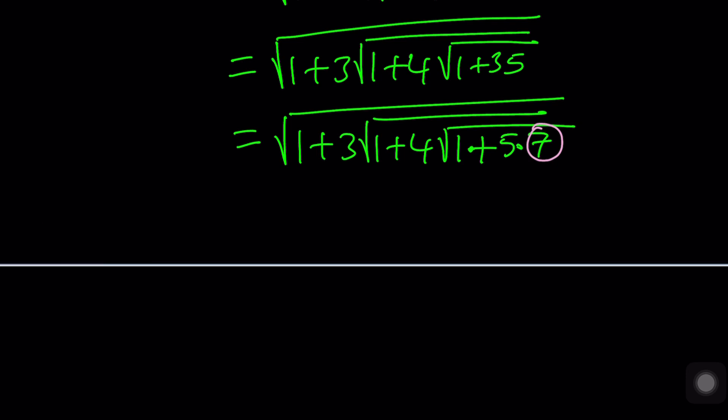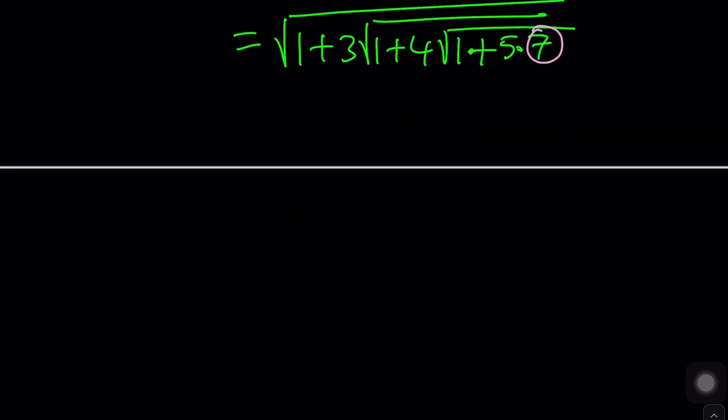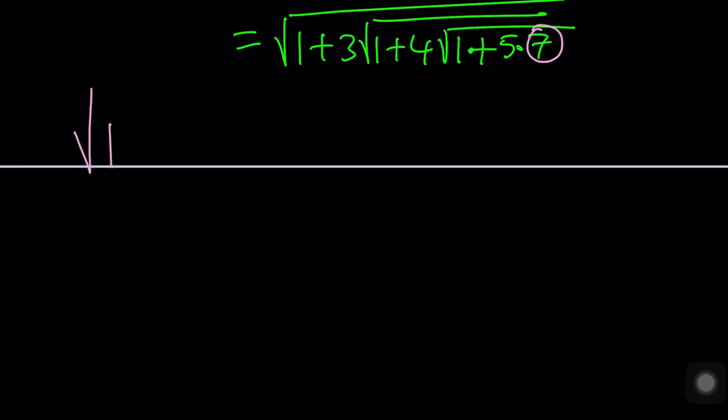What radical are we trying to evaluate? The original one. It starts with square root of 1 plus 3 times the square root of 1 plus 4 times the square root of 1 plus dot dot dot. It goes on forever. So what is going on here? Take a look at this.